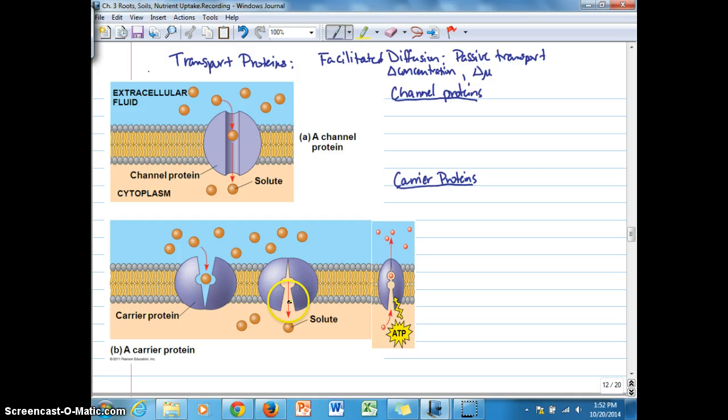Once the solute dissociates from the binding site, the transport protein goes back to its original conformation, which is open to the extracellular side of the membrane. That's just basically how channel proteins versus carrier proteins work.